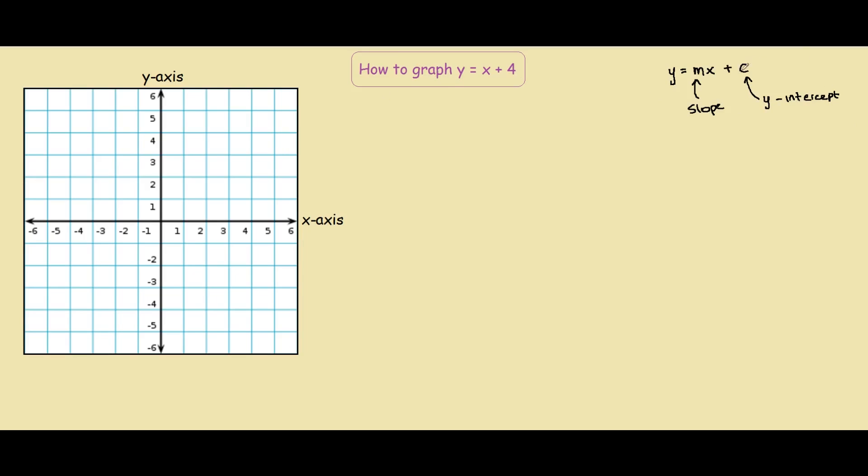So we also know the y-intercept occurs when x equals 0. Because when x equals 0, say here, x is 0, we have a point along the y-axis. This is why it's called the y-intercept.